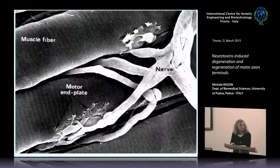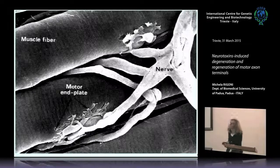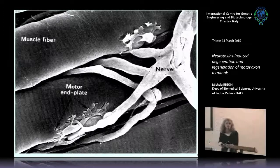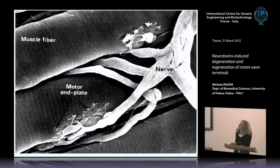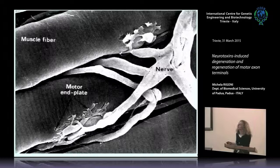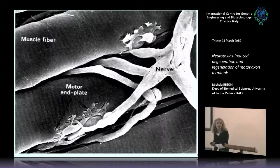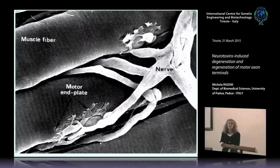The neuromuscular junction can also be injured by mechanical traumas, by chemicals, and there are autoimmune diseases where the junction is targeted by complexes between autoantibodies and the complement system.